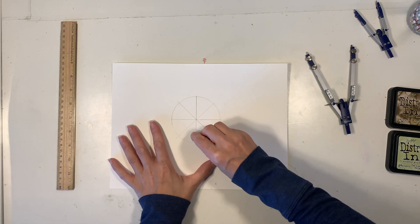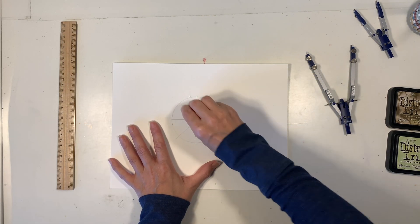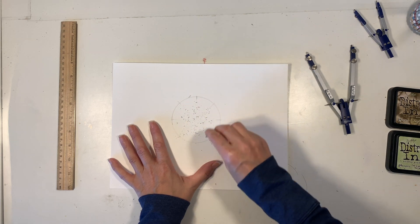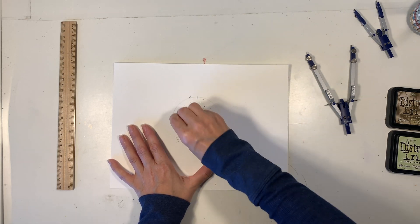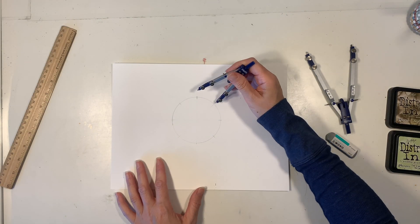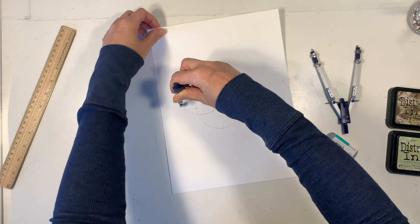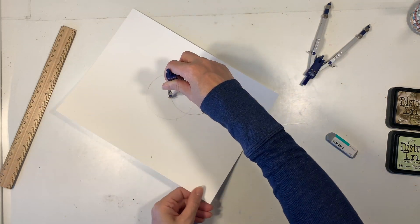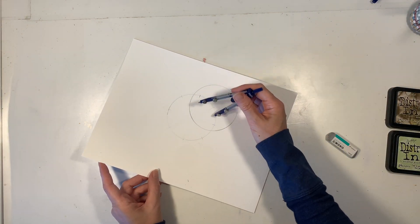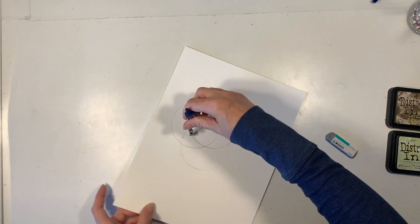We're going to erase all the extra lines and marks because we don't need them, and we're going to have a lot of arcs and circles when we're done, so it's best to erase those now. Next, you're going to readjust your compass so that it has the same radius as your original circle, and then at each of those 8 points, you're going to draw a circle.